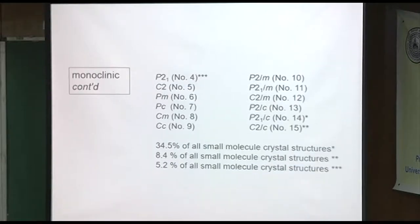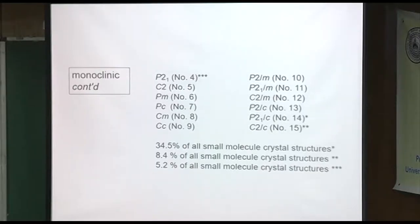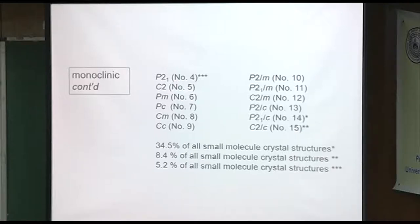Here's the rest of the monoclinic ones — a useful piece of information. 34.5% of all small-molecule crystal structures in the Cambridge Structural Database occur in number 14, P21/C. That's an awful lot. Why that is, it's not really clear. People have attempted to explain it, but there's really no easy way to explain why it's so common. It seems to produce an efficient packing case.